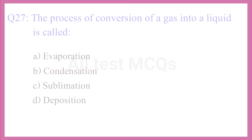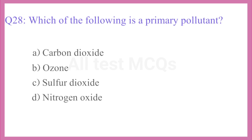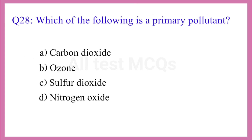Question No. 28. Which of the following is a primary pollutant? The correct answer is option C. Sulphur dioxide.